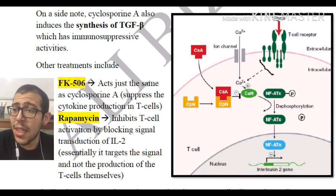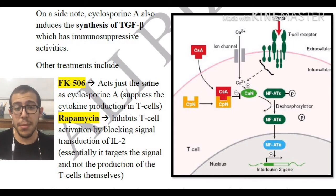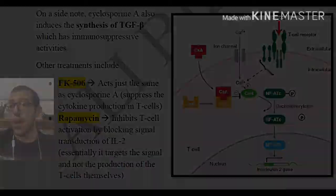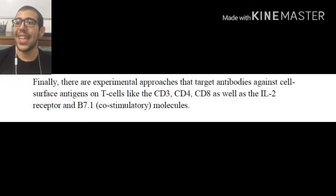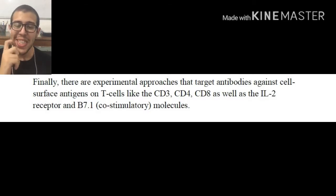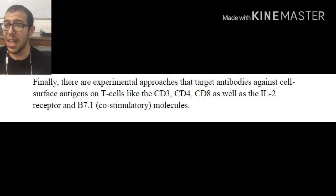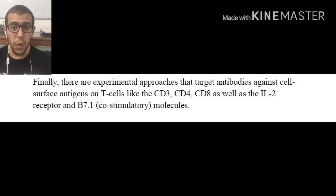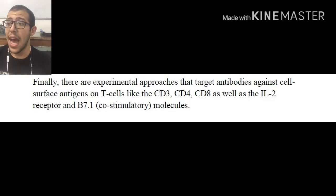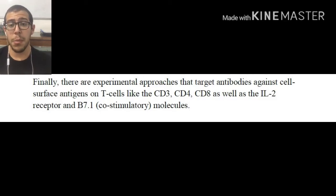The slide also illustrates the mechanism of action mentioned previously. Finally, there are experimental approaches that target antibodies against cell surface antigens — not only targeting the production cascade of T cells, but targeting the T cells themselves by specifying antigens like CD3, CD4, CD8 (exclusive to cytotoxic T cells), the interleukin-2 receptor, and co-stimulatory molecules like B7.1 and B7.2.